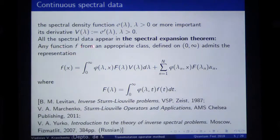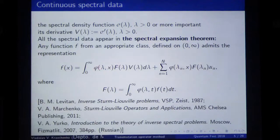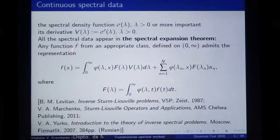The spectral expansion theorem says more or less the following: any function F from an appropriate class defined on a half line admits this representation. Phi is our solution of the Cauchy problem; we change lambda here from zero to infinity. For every value of lambda we obtain the solution of the Cauchy problem. V of lambda is our derivative of the spectral density function.